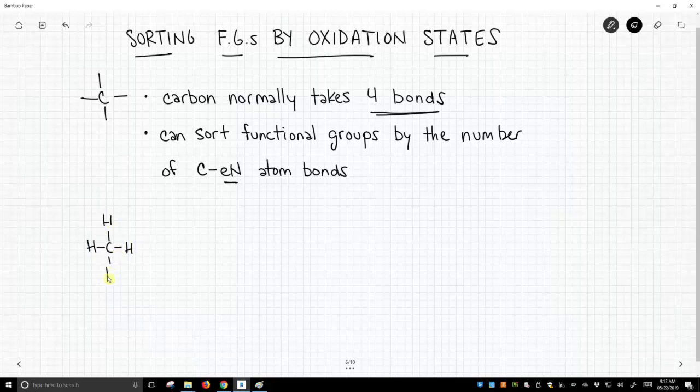So this is methane. Methane is an example of an alkane, and we'll talk about alkanes in a soon-to-be-seen video. And this carbon has zero bonds to an electronegative atom. So we will put alkanes in that zero category.